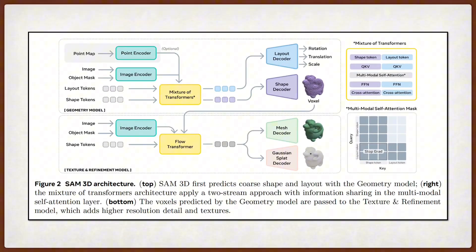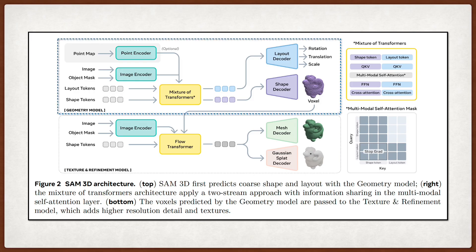Let's jump straight into the model architecture, which they break down into two main stages, starting with the geometry model. The problem formulation here is that you have an image I and a mask M, and you want to approximate the conditional distribution of the shape S, texture T, and the layout parameters, which are rotation R, translation T, and scale A's.